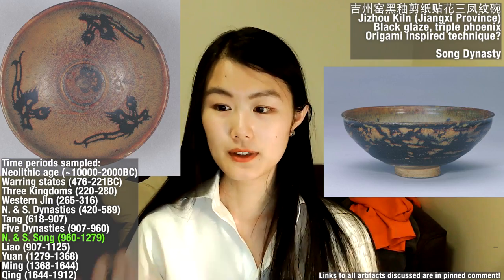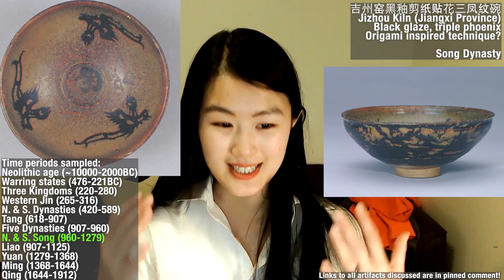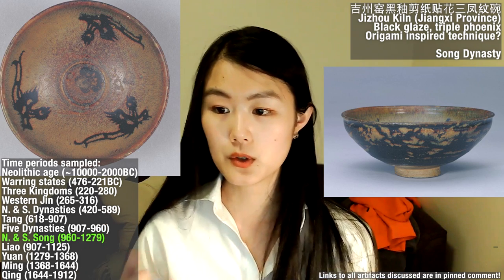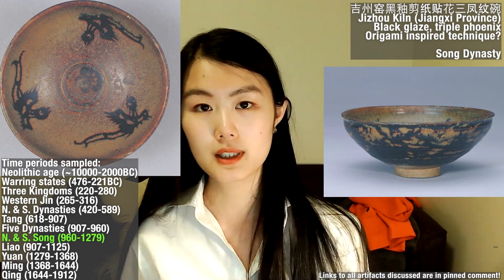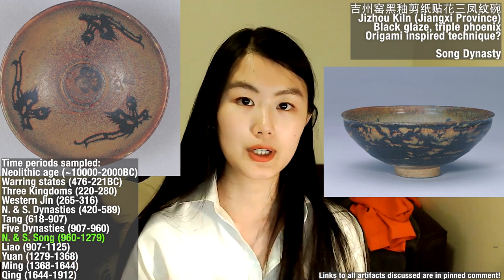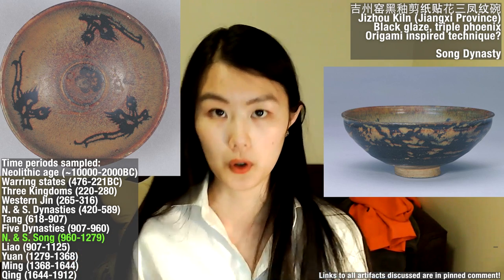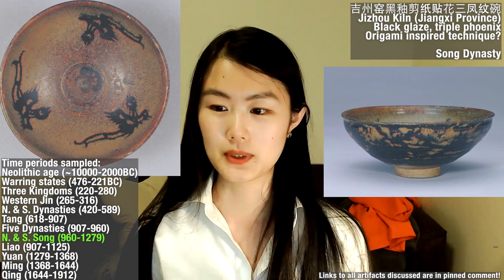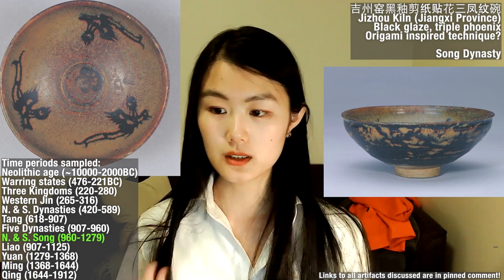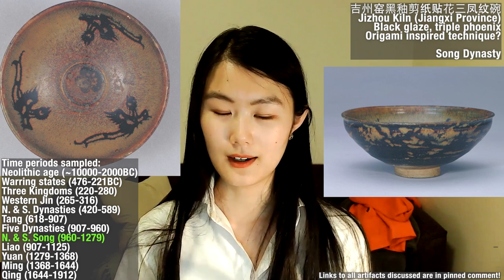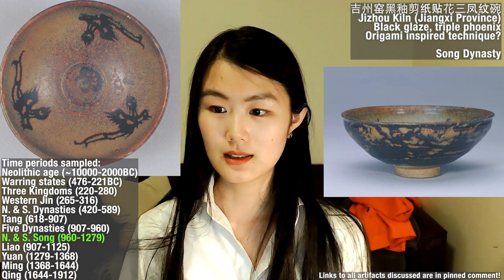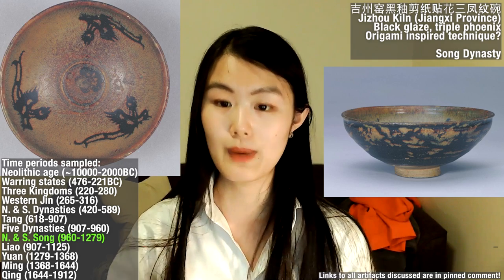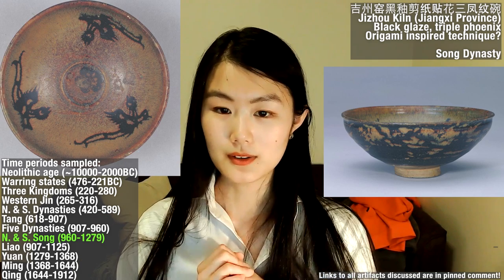The last piece I want to talk about from the Song Dynasty is this Jizhouyao black glaze bowl with a phoenix pattern. Jizhouyao is a kiln in Jizhou, Jiangxi province, known for black glaze. Black glaze was quite popular in the Song Dynasty because tea drinking was an important practice, and tea drinkers preferred black glaze cha zhan, or tea bowls. Even Song Huizong, one of the emperors, remarked that black glaze tea bowls were very elegant and elevated. What's remarkable about this piece are the three phoenixes on the inside — the artisans in the Jizhou kiln actually used origami-inspired techniques to get that phoenix pattern onto the inside of the bowl.